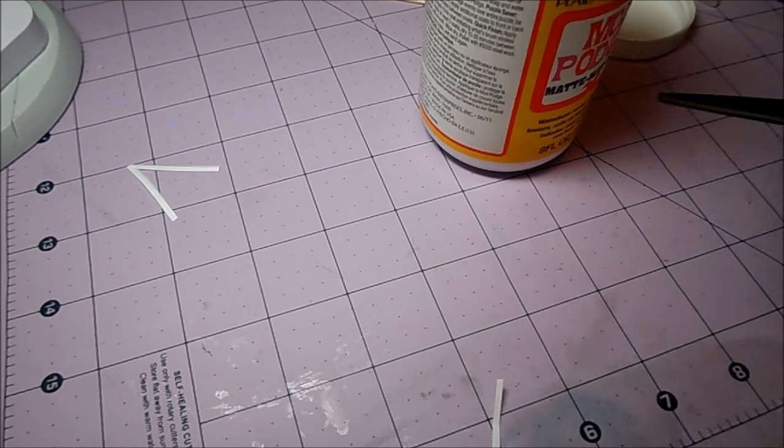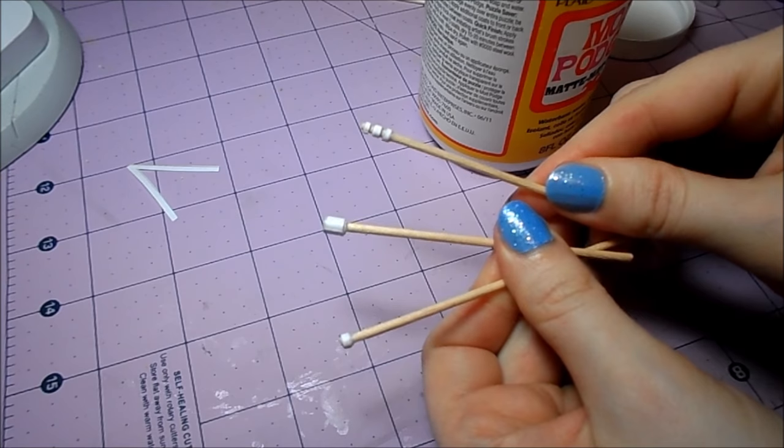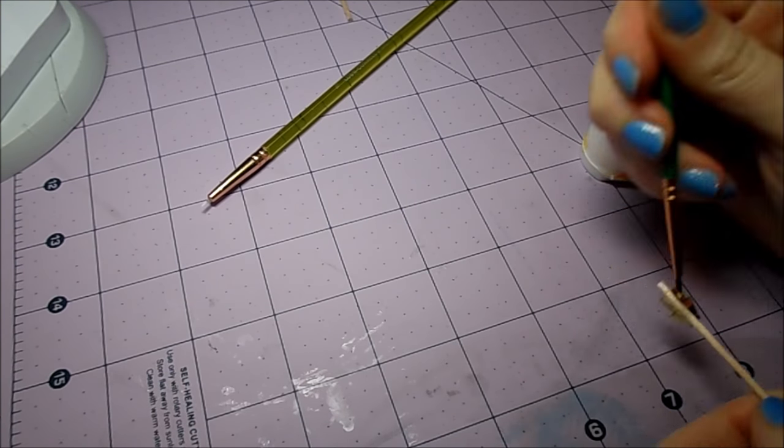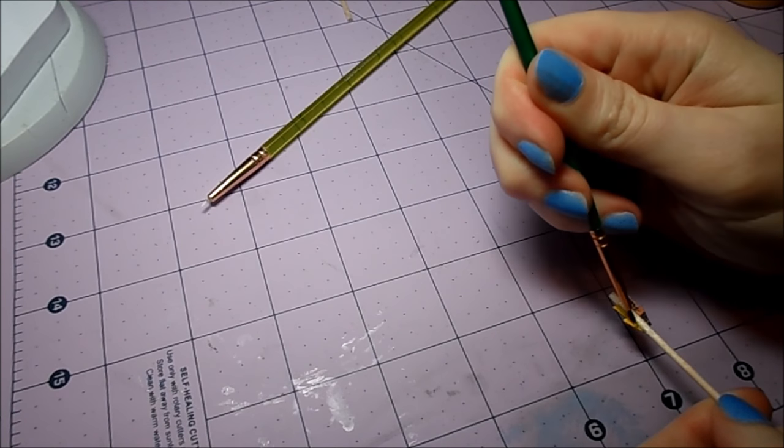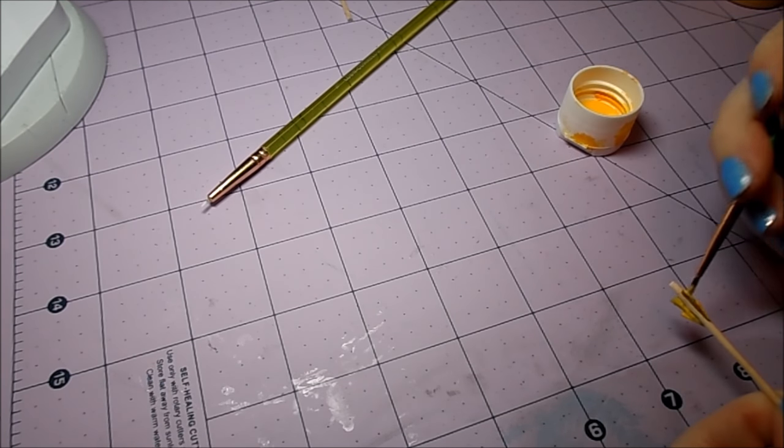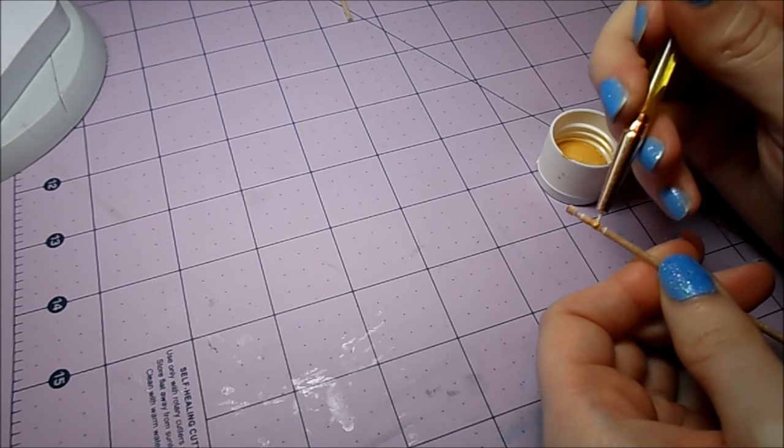Now we're ready to paint our arrows. Just remember that before you paint, you want to make sure there's a layer of Mod Podge dry on the arrow heads and fletchings. Use your choice of colors of craft paint. I can already tell that this is going to take me several coats of paint, but that's fine. It's better to apply thin coats than to glob on the paint.